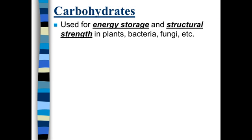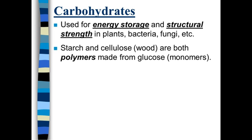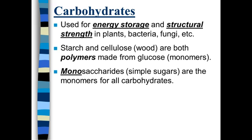Let's look at what carbohydrates are used for by cells. Primarily they are used for energy storage, but in plants they are also used for structural strength. What we call dietary fiber is the cell wall of plant cells, which is made of something called cellulose — and that is a carbohydrate. Starch and cellulose are both polymers made from glucose monomers. Our monosaccharides, our simple sugars, are the monomers for all carbohydrates.